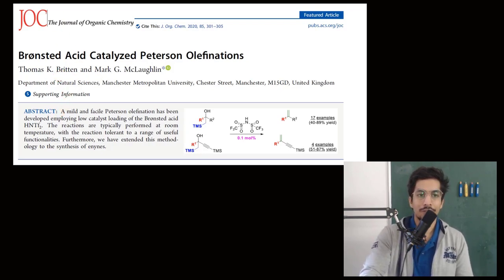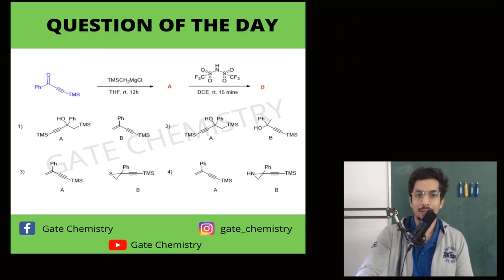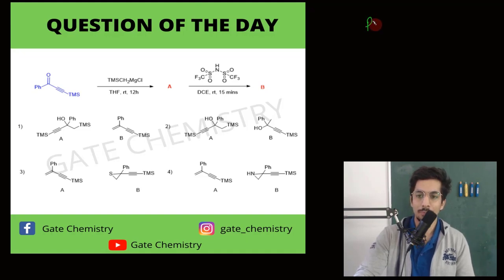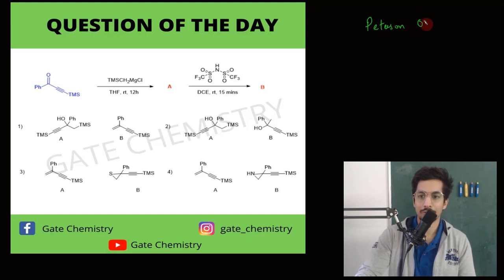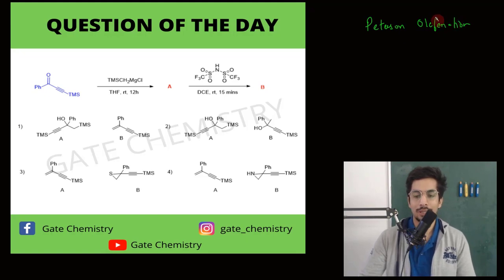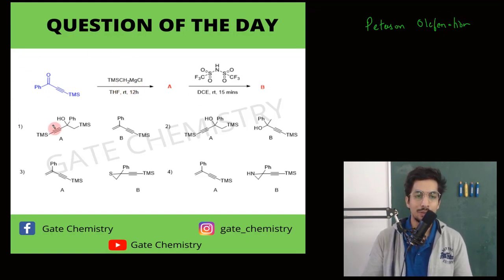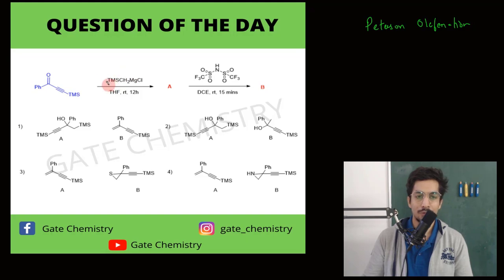The question comprises two important reactions. One is a 1,2-addition using a Grignard reagent, and the other is Peterson olefination — an important reaction from an exam point of view. As you can see, we have a trimethylsilyl (TMS) protecting group, and the Grignard reagent also has this TMS group.